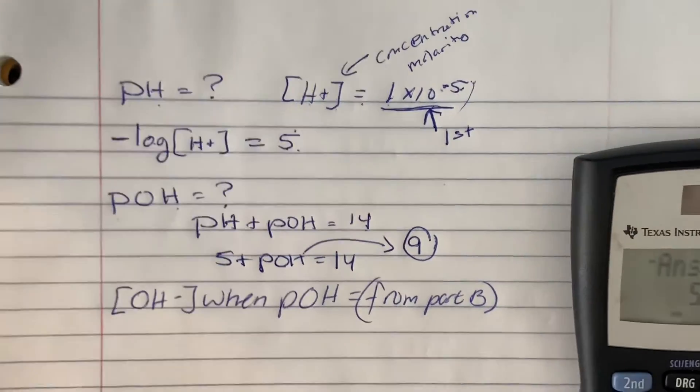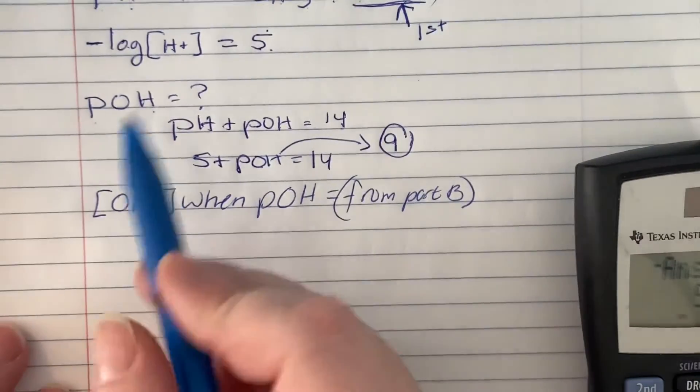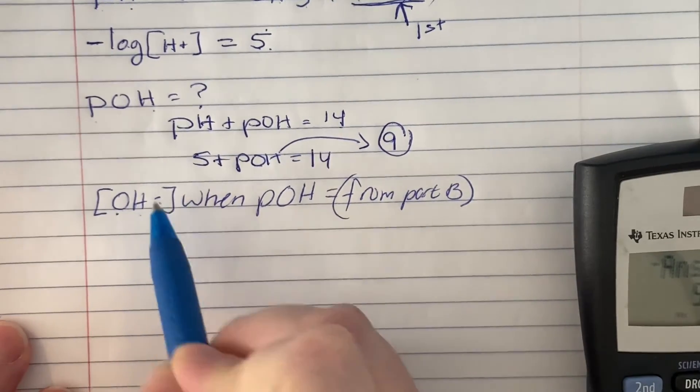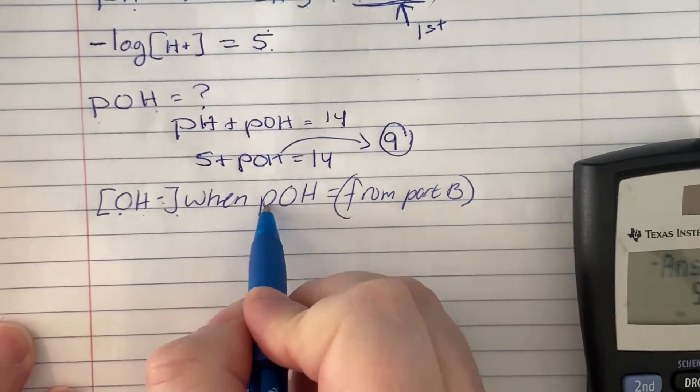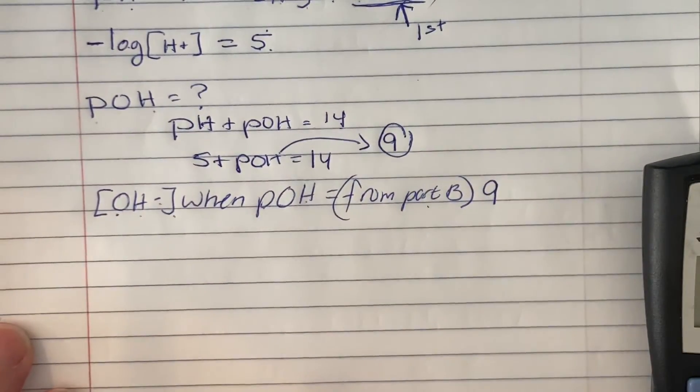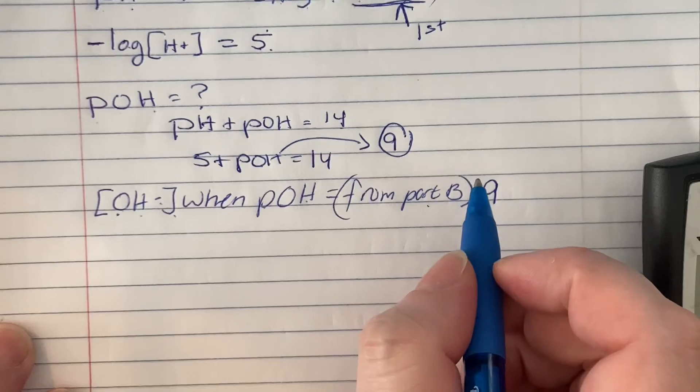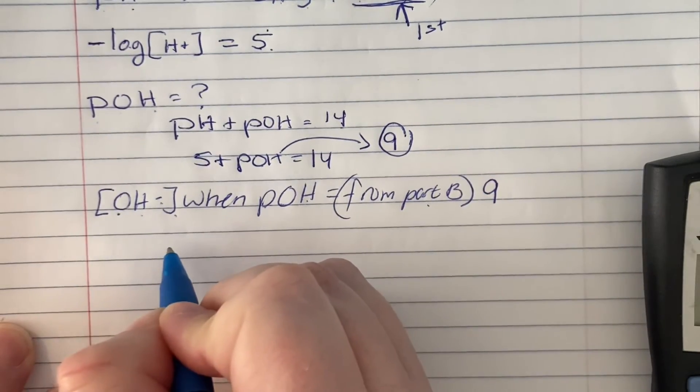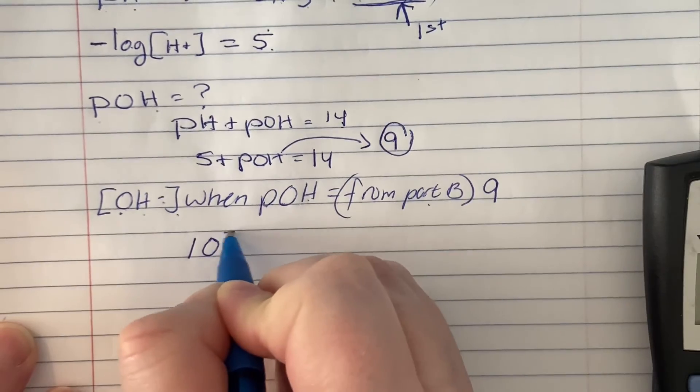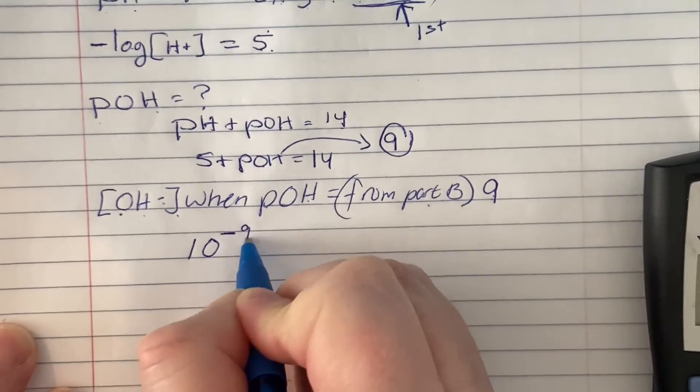Now, sometimes they're going to have you go the other way around. They're going to ask, what is the hydroxide ion concentration when the pOH is, from part B, is 9? So sometimes you go the other way around. And so for that one, you are going to go 10 to the negative and whatever that number is.